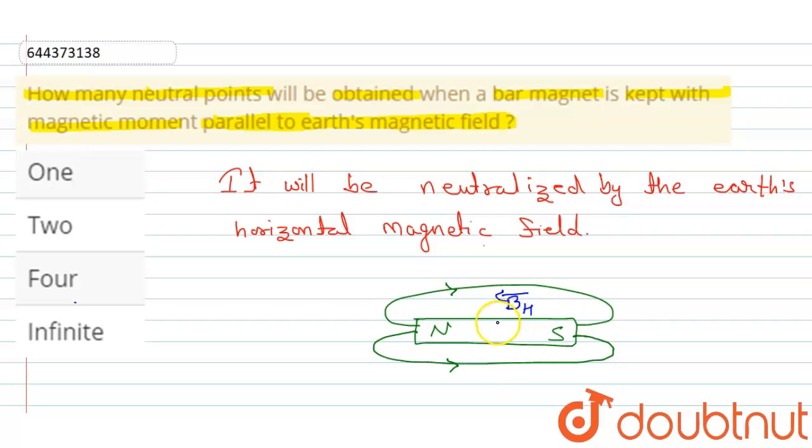And here we found that there are infinite number of spots where the magnetic moment is neutralized. Okay, that's it. So here option D is correct. Thank you.